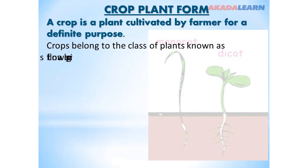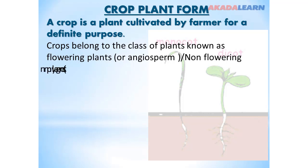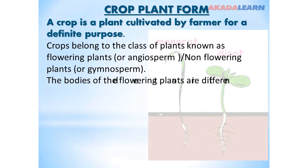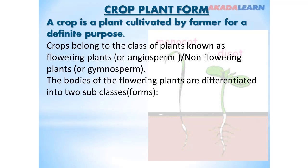Crops belong to the class of plants known as flowering plants, or angiosperms. They can also belong to the non-flowering plants known as gymnosperms. Our attention will basically be on the flowering plants, not the non-flowering plants.